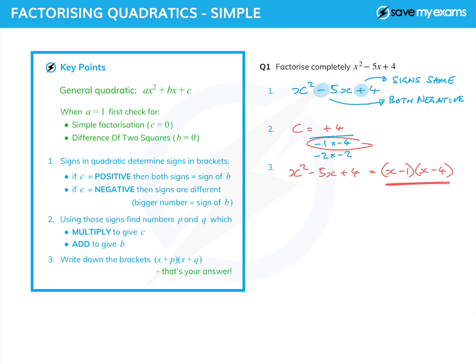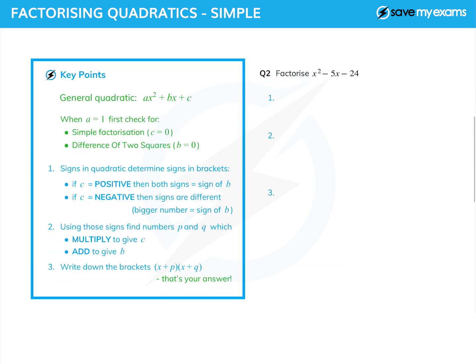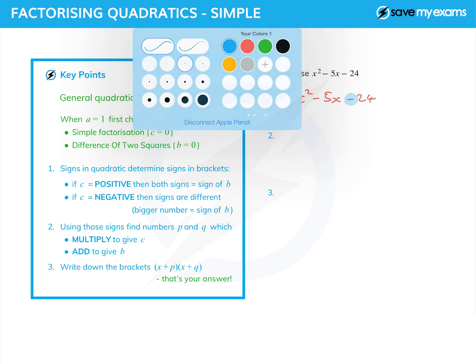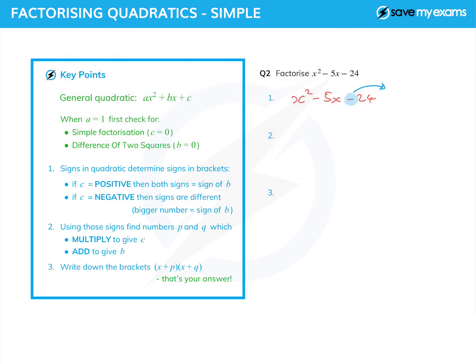Let's do one more where c is in fact negative this time. It's only slightly different. We look at our quadratic: x² - 5x - 24. We look at this sign first. This time it's negative, so we follow the rule that if c is negative, then the signs will be different.